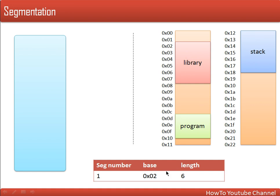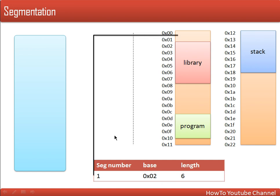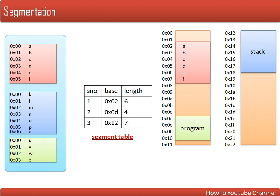This information is stored in a segment table: the segment number, the base address (the starting address in physical memory for that segment), and the size (the length of that segment). For example, the library segment may be assigned number one, with a starting address of two and a length of six. There are three segments in our example, and all segments are stored in memory.